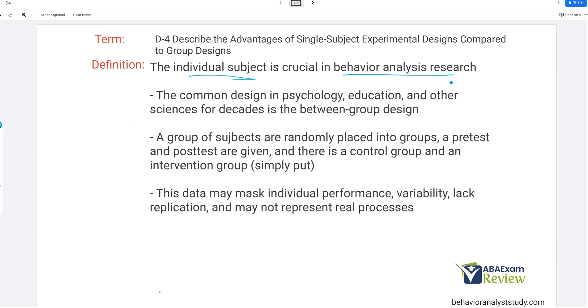We're always focused on the individual subject. So a major difference between single-subject designs and group designs is that with group designs, we're looking at a larger sample rather than the individual. The common design in psychology, education, and many other sciences for decades, traditionally, the between-group design. A group of subjects are randomly placed into groups, a pre-test and post-test are given, a control group and an intervention group. That's simply put.